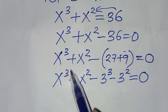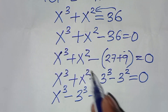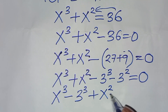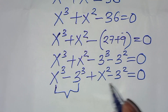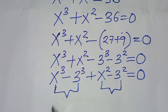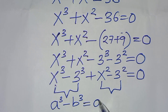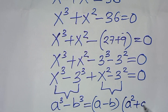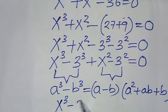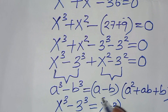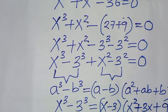We have two parts here. The first part is the difference of two cubes, expressed as a cubed minus b cubed, which factors as a minus b times a squared plus ab plus b squared. This implies that x to the power 3 minus 3 to the power 3 is the same as x minus 3, times x squared plus 3x plus 9. Let's call this equation 1.